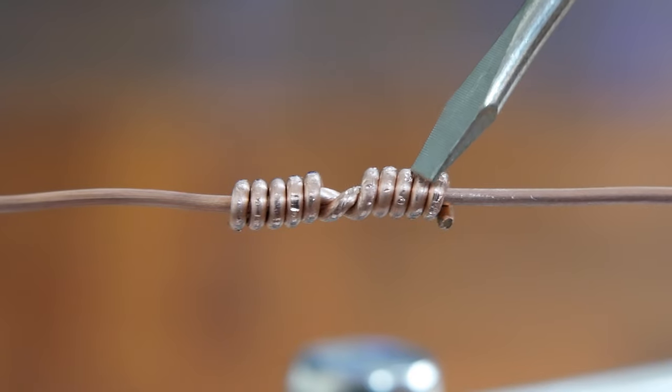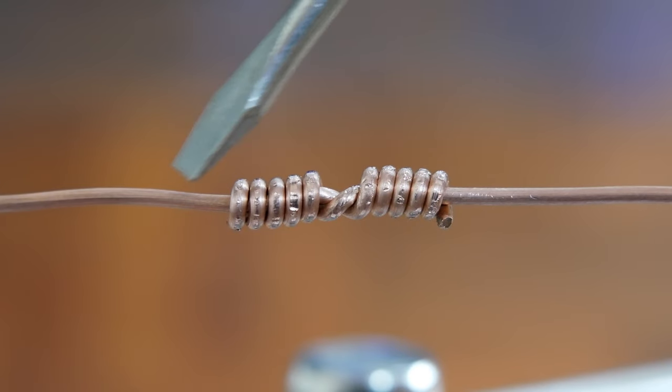So this is a wrap joint. It's definitely mechanically secure. It would probably be okay by itself. But adding solder to it will ensure that over time, water doesn't leak in here. And you'll get a film of corrosion between the two wires. So let's go ahead and solder this. And we'll finish it out.